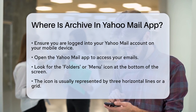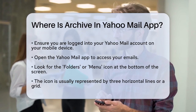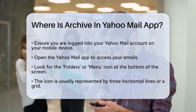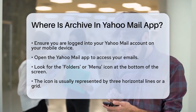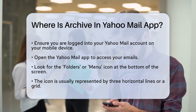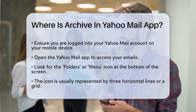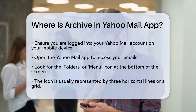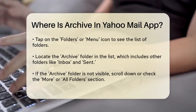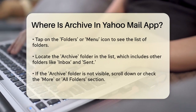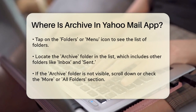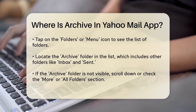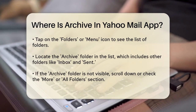First, make sure you're logged into your Yahoo Mail account on your mobile device. Once you're in, you need to navigate to the area where your archived emails are stored. To find the Archive folder, open the Yahoo Mail app and look at the bottom of the screen. You'll see several icons, including one for the inbox, drafts, and more. Tap on the Folders or Menu icon, usually represented by three horizontal lines or a grid, depending on the app version.